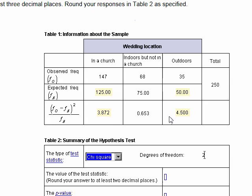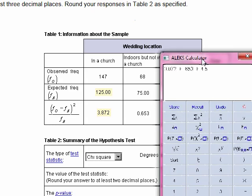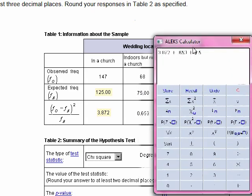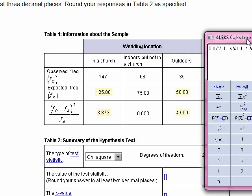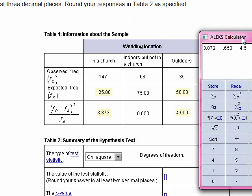The test statistic is obtained by adding up this last column. We take 3.872 plus 0.653 plus 4.5, and when we add up all of those values, we get our test statistic of 9.025.